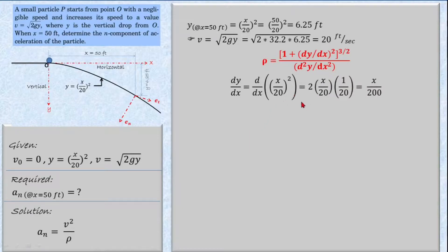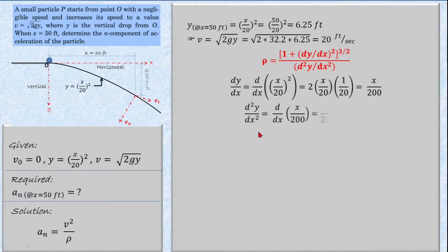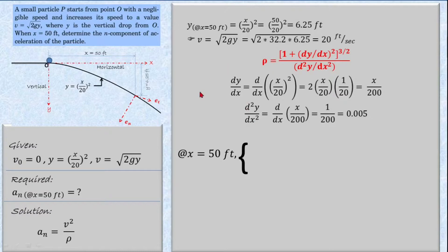First, dy/dx = d/dx of (x/20)², which gives dy/dx = x/200. Then, differentiating again to get d²y/dx², which equals 1/200 = 0.005. This second derivative is a constant and does not depend on x.